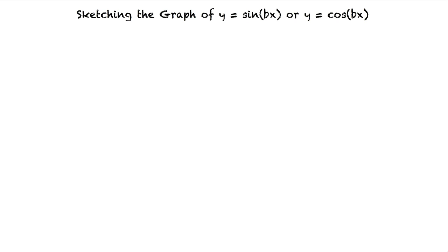How does multiplying x by a constant in the function change the graph? Let's take a look at the function y equals cosine of x.